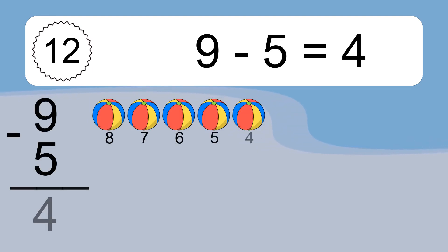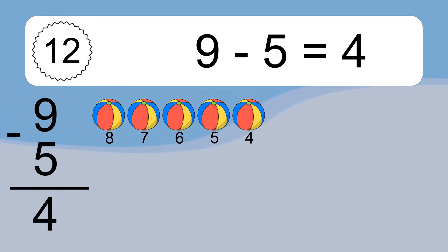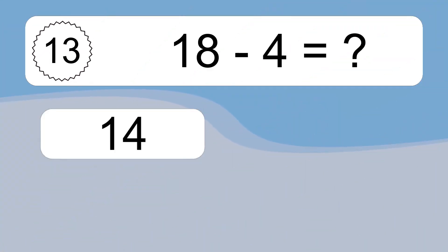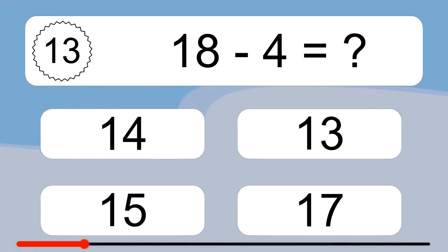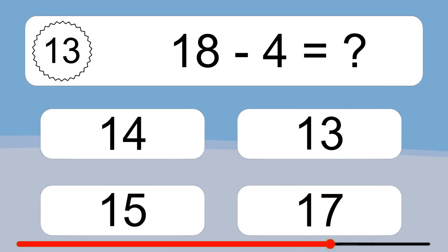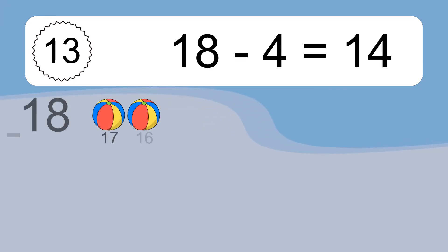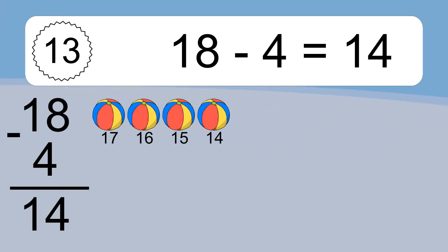9 minus 5 equals what? 9 minus 5 equals 4. Let's count it: 8, 7, 6, 5, 4. 18 minus 4 equals 14. Let's count it: 17, 16, 15, 14.